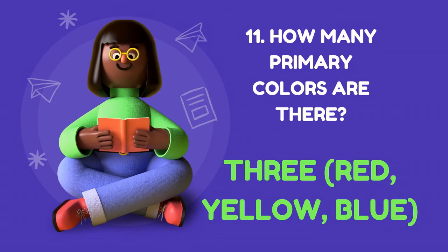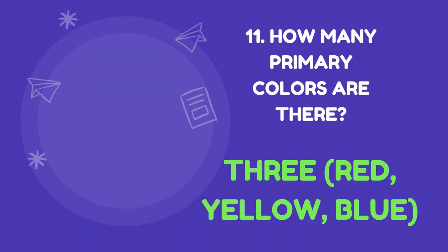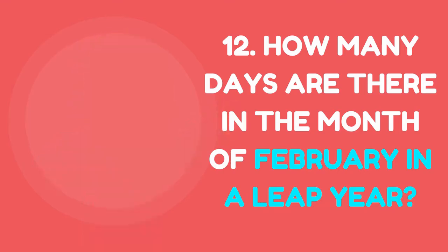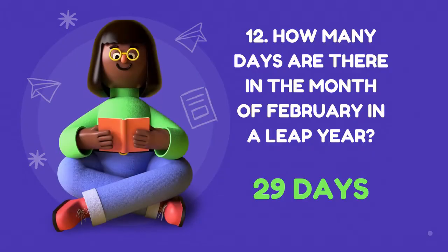How many primary colors are there? The answer is three: red, yellow, and blue. How many days are there in the month of February in a leap year? The answer is 29 days.